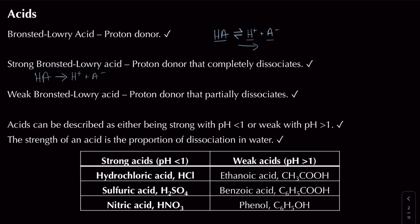A weak Brønsted-Lowry acid is similar in that it's a proton donor, but different in that it only partially dissociates — not all of the HA turns into H⁺ and A⁻. We emphasize this by drawing a reversible reaction arrow for weak acids. To tell the difference: a strong acid will typically have a pH less than 1, and a weak acid a pH greater than 1.